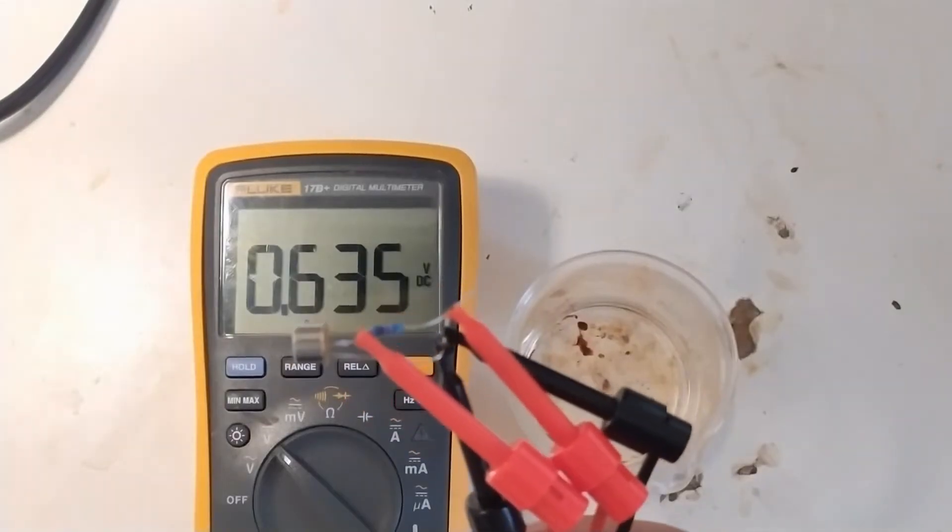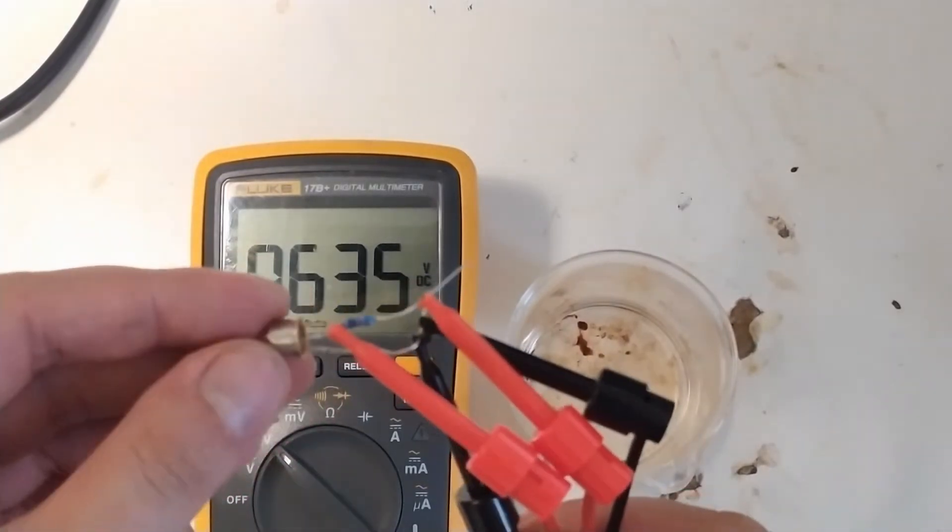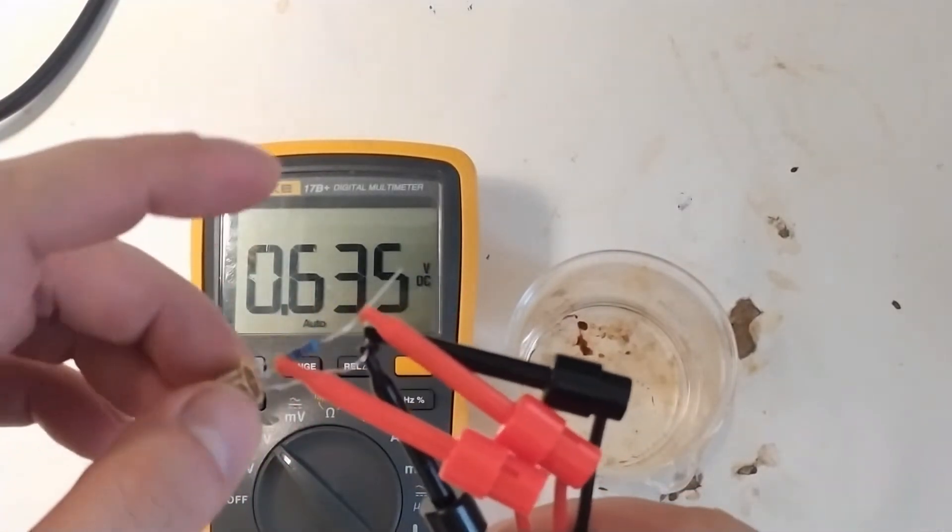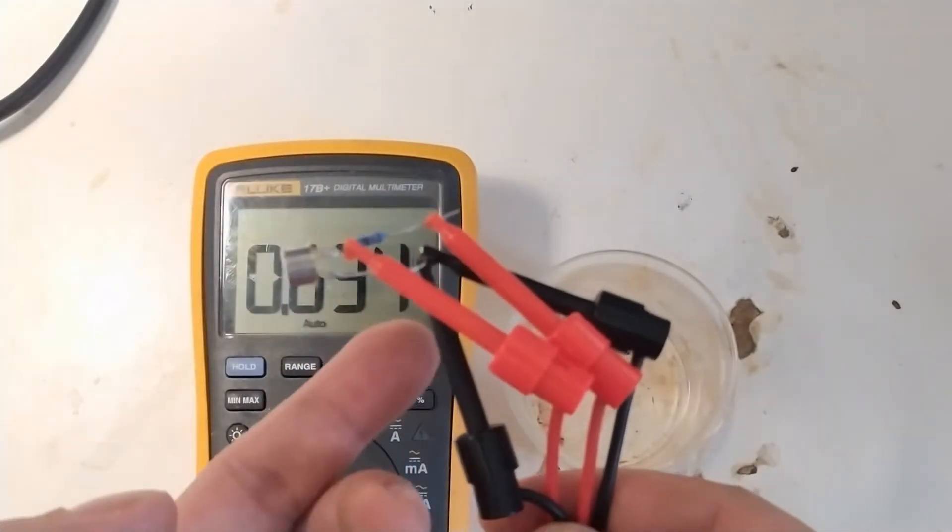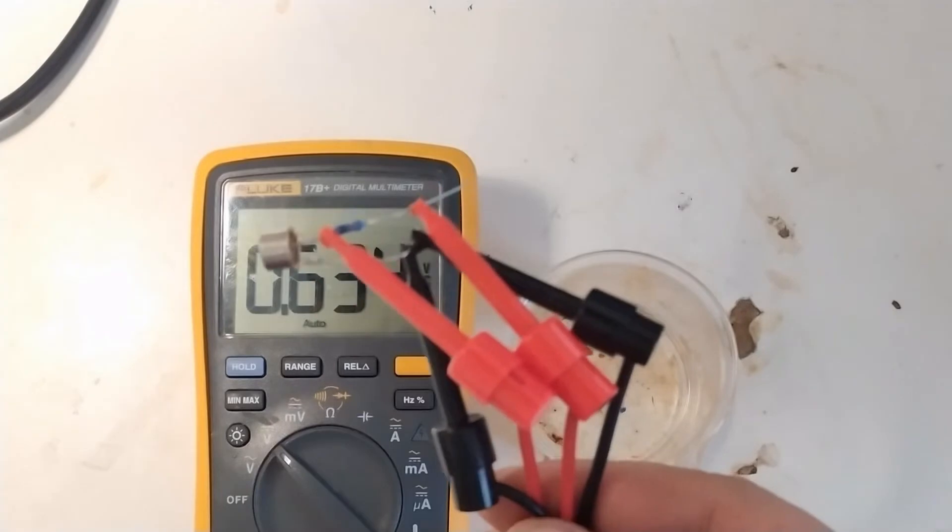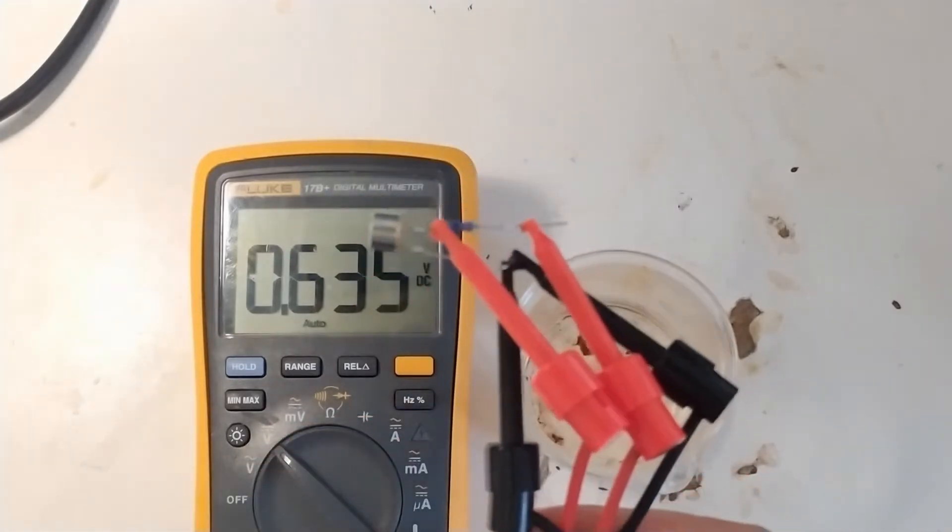Right, so here we have a random NPN transistor from my bin of parts, and it has its base connected to a resistor which is hooked up to a power supply. The emitter is hooked up to ground, and then we're measuring the base emitter voltage here.